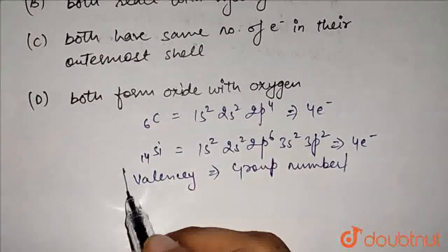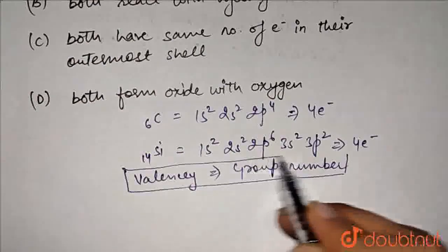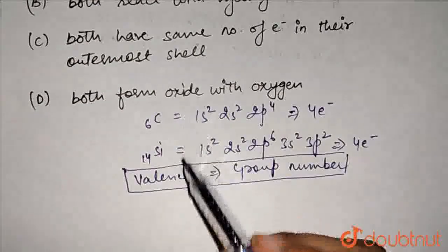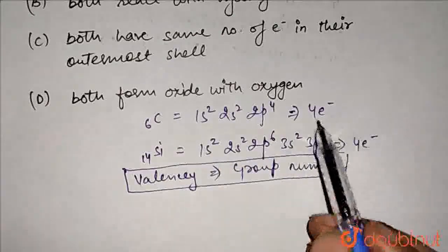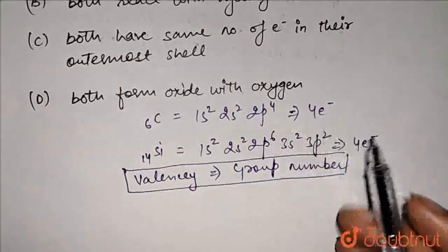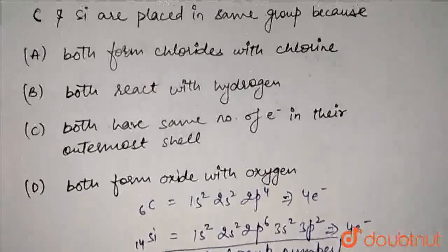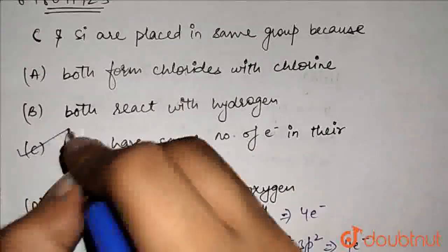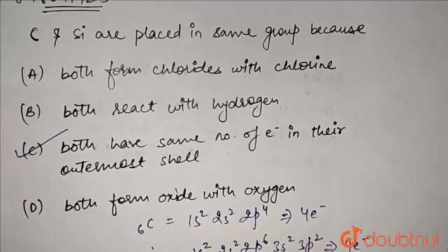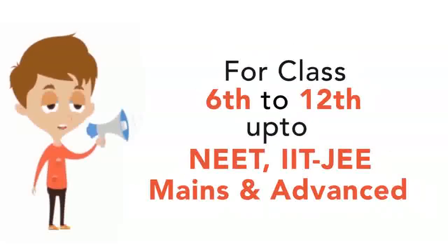So that means, if we look at carbon and silicon, it's the same number of valence electrons present. Carbon and silicon have the same number of electrons present.